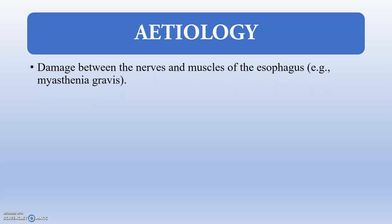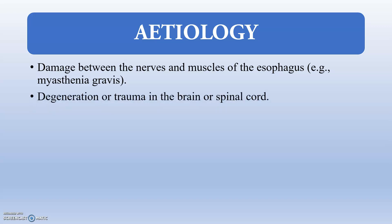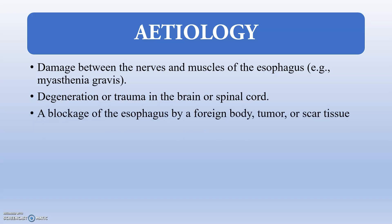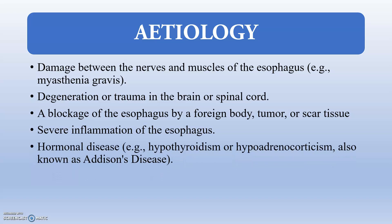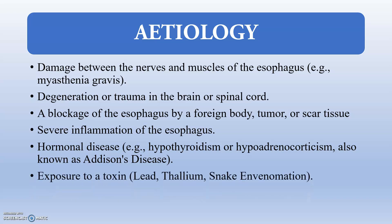Acquired megaesophagus can result from damage between the nerves and muscles of the esophagus, such as myasthenia gravis. Other causes include degeneration or traumatic injury of the brain or spinal cord, blockage of the esophagus by a foreign body, tumor, or scar tissue, and severe inflammation of the esophagus (GERD). Hormonal diseases such as hypothyroidism and hypoadrenocorticism (Addison's disease) are also implicated, as are toxins such as lead, thallium, and snake envenomation, since neurotoxic snakes affect the neural system and can cause aperistalsis by impairing the thoracic and celiac ganglia.